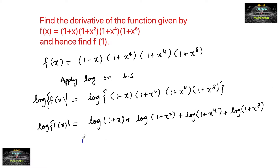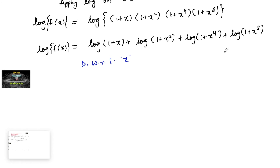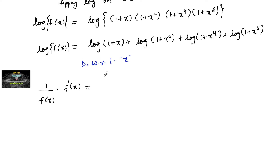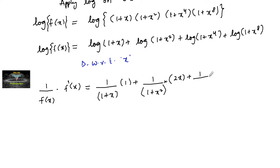Now differentiate with respect to x on both sides. We get (1/f(x))·f'(x) = 1/(1+x)·1 + 1/(1+x²)·2x + 1/(1+x⁴)·4x³ + 1/(1+x⁸)·8x⁷.